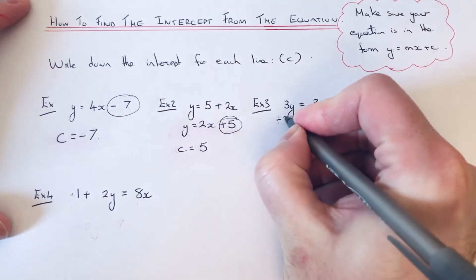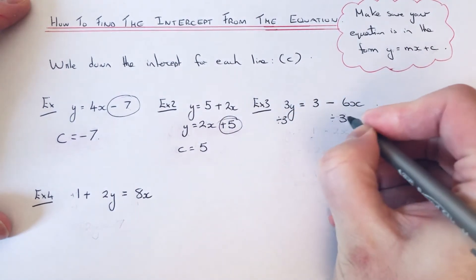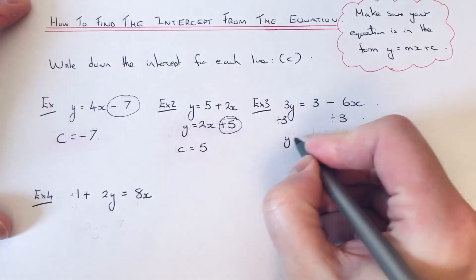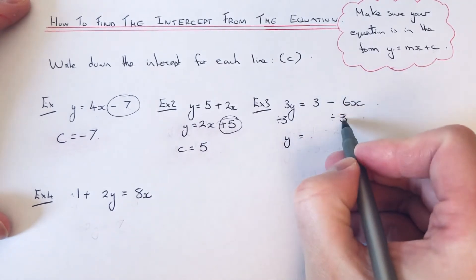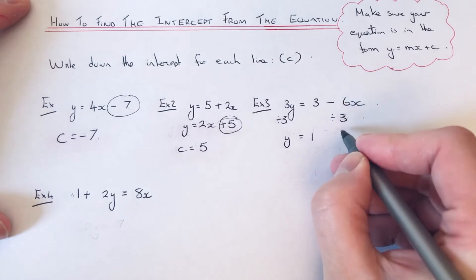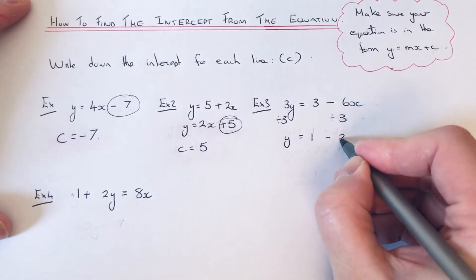If you make it the subject by dividing by 3 on both sides, that will give me y equals. So 3 divided by 3 is 1, minus 6 divided by 3 is minus 2.